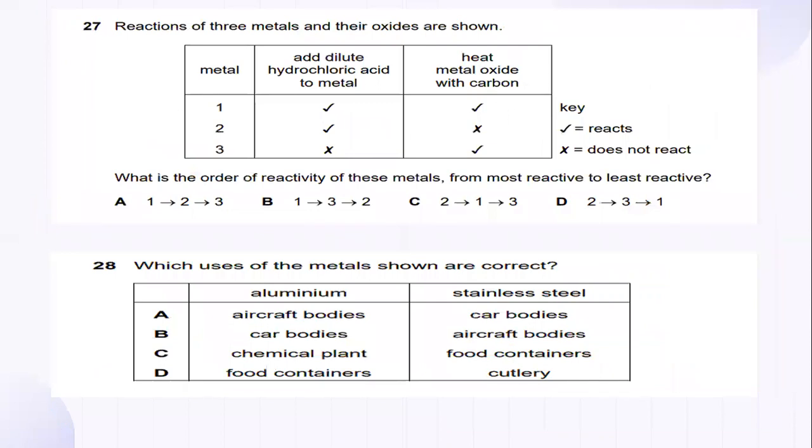Let's look into the reaction of three metals in their oxide are shown. When the metal one add dilute hydrochloric acid to metal, what will happen? It will react. In terms of heat metal oxide with carbon, it also reacts. So, in this, which is the order of the activity of this metal from most reactive to least reactive? So, the answer for this number 27 is C.